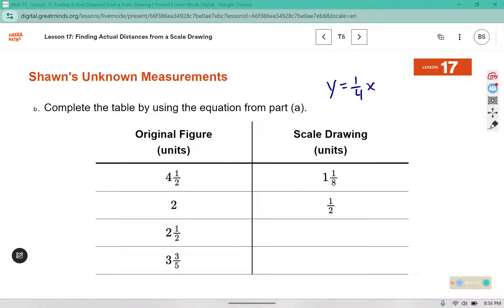Complete the table by using the equation from part a. These are all x values, so in order to figure out the y value, we are going to multiply by replacing the x with the original figure length and multiplying it by 1 fourth. So this will say y equals 1 fourth times 2 and a half.